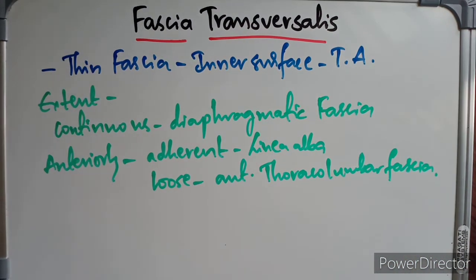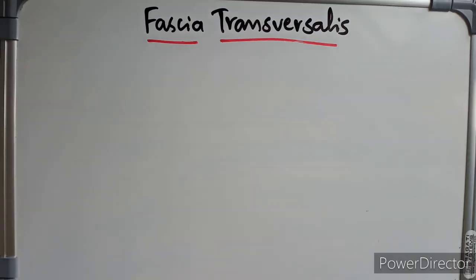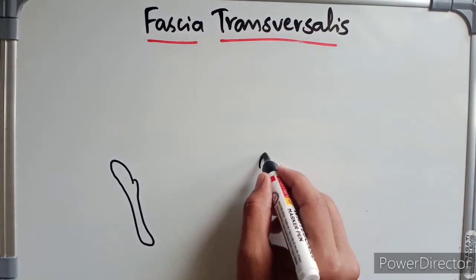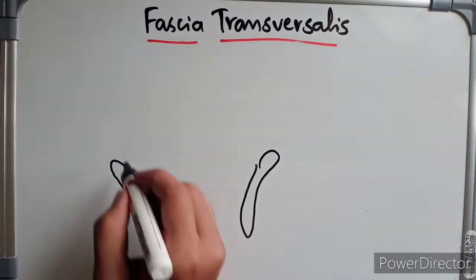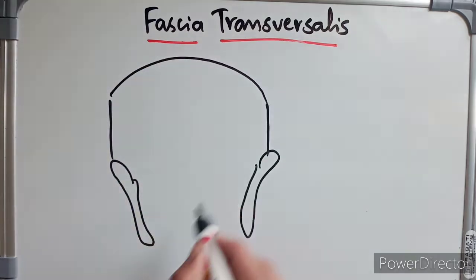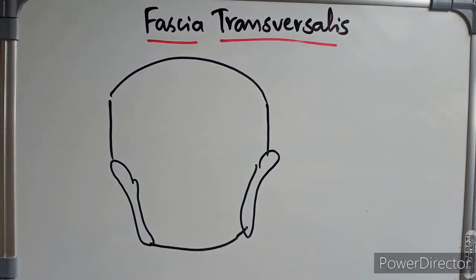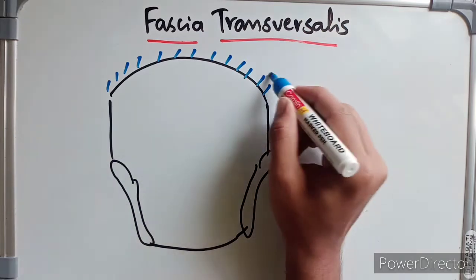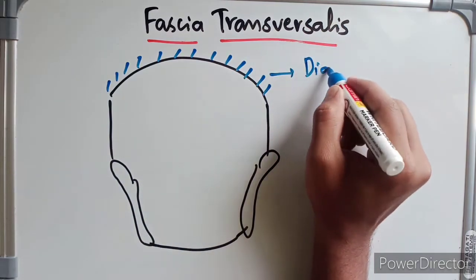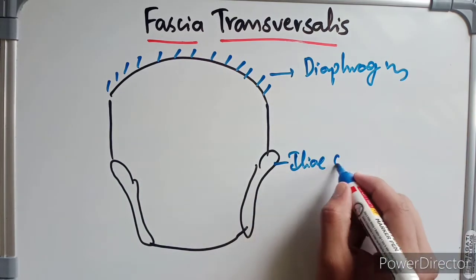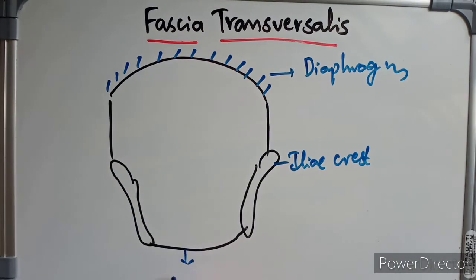Now talking about the important features — first I will draw the fascia to show you. I am drawing the lateral end of the hip bone, the iliac crest and the hip bone. I am going to name everything. Above this is the diaphragm, and this is the pelvic floor.